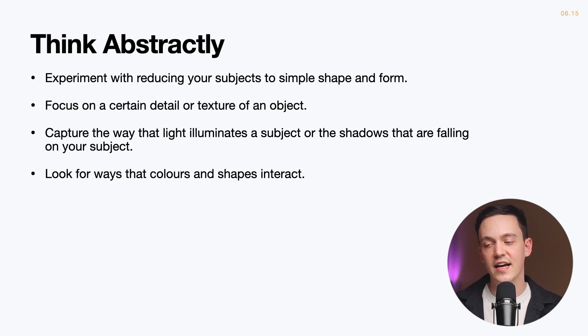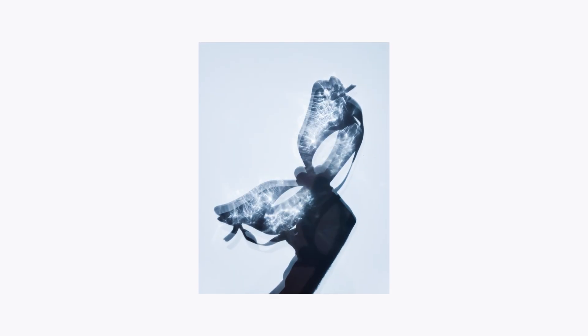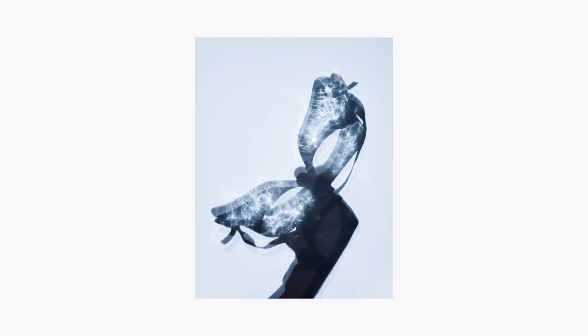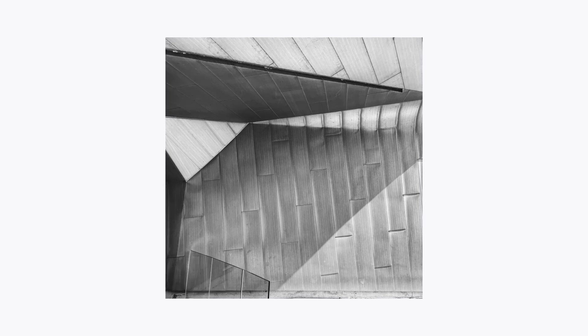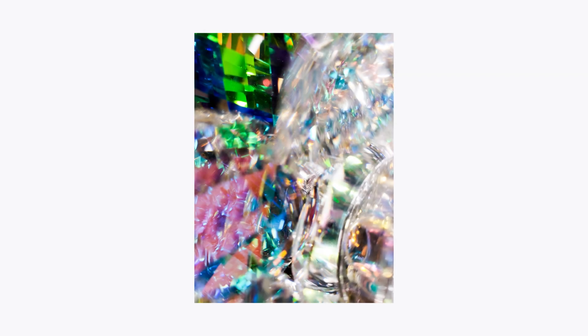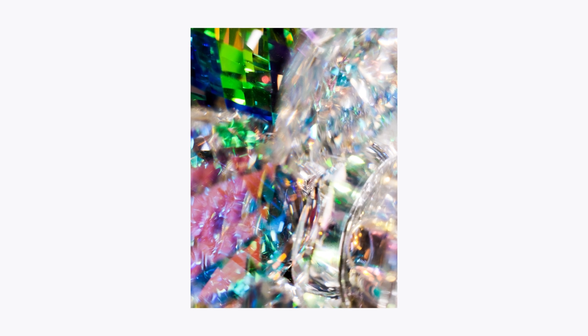The last compositional technique I'm going to share is to think abstractly. Often we find ourselves trying to capture the likeness of our subjects, but there is a whole other way to capture subjects that is more focused on shape and form. This means composing images that perhaps focus on a certain detail of a subject, the texture of that object, the way that light contours its edges, or the way that colors and shapes are interacting.